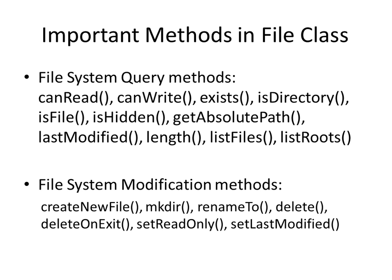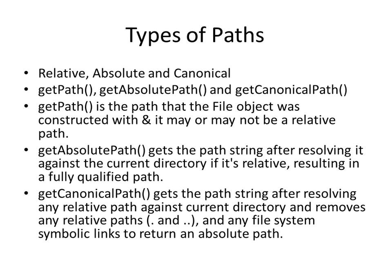Paths are of three types: relative paths, absolute paths, and canonical paths. There are three corresponding methods in the File class: getPath, getAbsolutePath, and getCanonicalPath. getPath returns the path that the File object was first created with — it may or may not be relative. getAbsolutePath gets the path string after resolving it against the current directory if it is relative, resulting in a fully qualified path. getCanonicalPath gets the path string after resolving relative paths — including dot (current directory) and dot-dot (parent directory) — and also resolves any symbolic links, returning an absolute path.